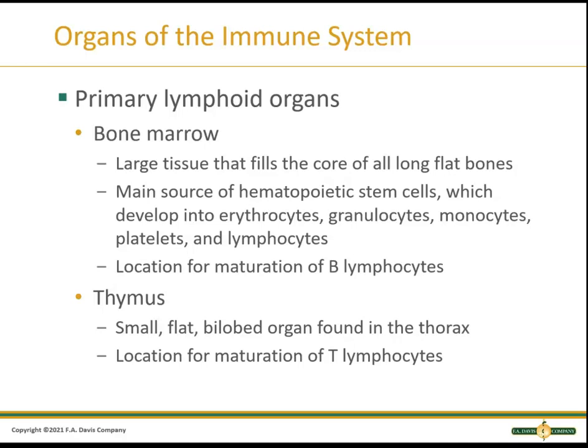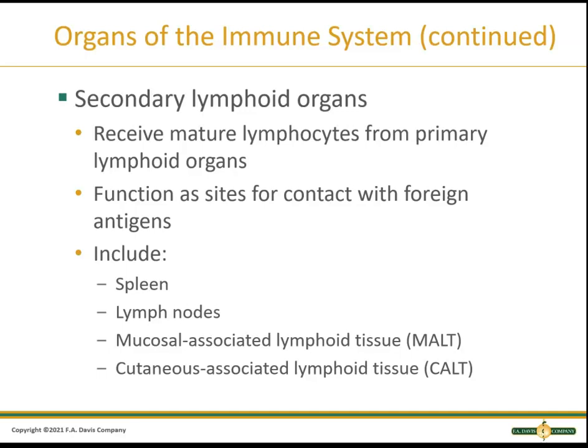The organs of the immune system are divided into primary and secondary. The primary lymphoid organs are the bone marrow and the thymus. Bone marrow is in the core of long and flat bones — it's where stem cells make red cells, white cells, monocytes, platelets, lymphocytes, and where B cells mature. The thymus is a small, flat, two-lobed organ in the mediastinal area — visible on page nine of your textbook — where T cells mature. The thymus gets smaller as you age.